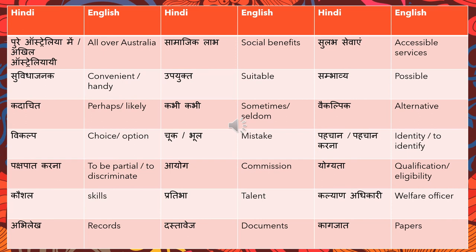Abhi lake means records. Dastaves means documents. Kaagzat means paper. These three words are used in the context of registering a property or vehicle. Those are all the words compiled for this video — I hope they were useful and that you'll be able to recall them faster when you come across them in your dialogues.